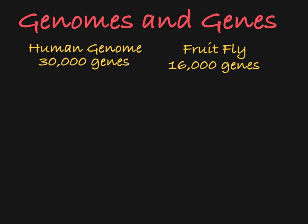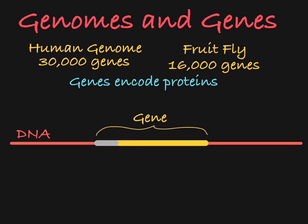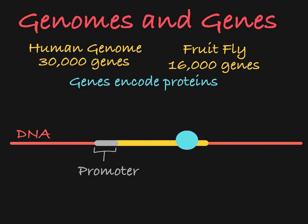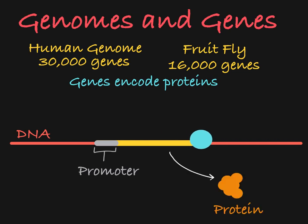These genes encode proteins, which are vital to the function of each individual cell and to the entire organism. Upstream of each gene, there is a promoter, which is the binding site for the cellular machinery that will access the gene to allow for the creation of the protein that is encoded by the gene.